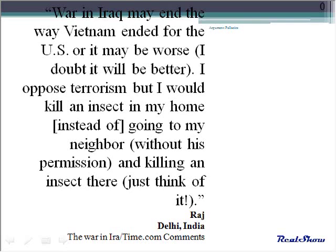The first false analogy is comparing Iraq to Vietnam. The second is comparing a terrorist to an insect. The arguer hopes to prove his point that terrorists should be sought out and killed in the United States rather than hunting them down in Iraq — where American intervention is unwanted — by using the logic that one should not kill a bug in his neighbor's home to prevent it from coming into his own. That's a stretch and definitely a false analogy.